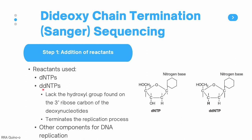In Sanger sequencing, we also have ddNTPs, which are like regular dNTPs but they lack the hydroxyl group found on the third ribose carbon of the deoxynucleotide. Whenever a ddNTP is added to a growing sequence of DNA, this terminates the replication process. You also need the other components for DNA replication like your polymerase and other substrates.